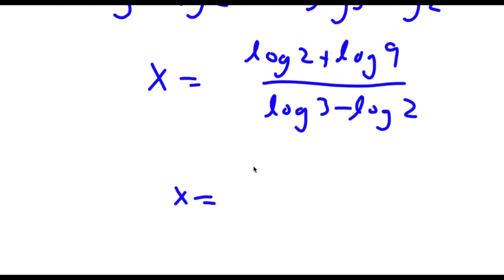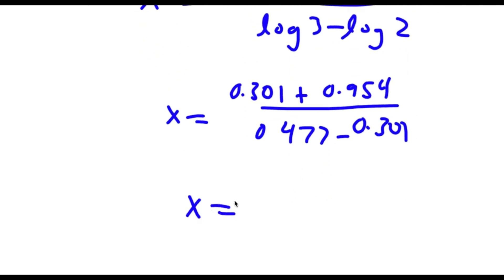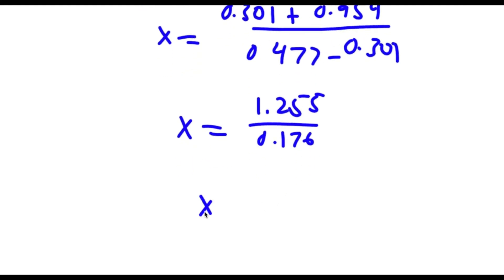So now log 2 is equal to 0.301, plus log 9 which is equal to 0.954. This is over log 3 which equals 0.477, minus log 2 which equals 0.301. So now this is equal to 1.255 over 0.176, which is equal to approximately 7.13. So this is my answer.